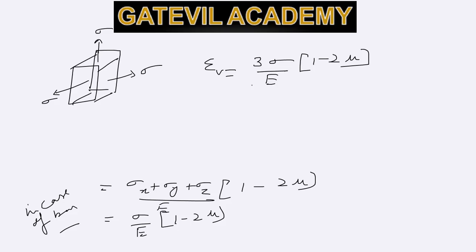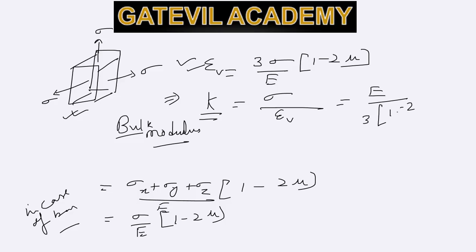So from this, we will define one more constant, and that constant is bulk modulus. It is represented by the symbol K. K is defined as the stress acting on this 3D object, sigma, divided by the volumetric strain. So if you see from this expression, it comes out to be e by 3 times 1 minus 2 mu.